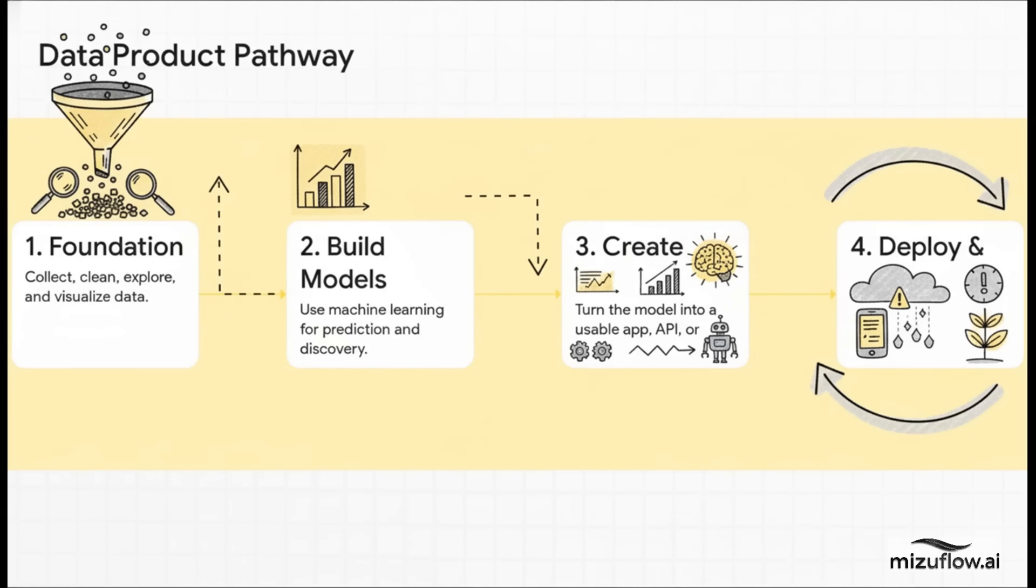And what's so fascinating is that the path to a data product, it starts in the exact same place as a report. You still have to collect, clean, and explore your data. But here's the big leap. Instead of stopping at a summary, you keep going. You use that data to build predictive models. You package those models into an actual tool, like a little web app or an automated alert. And then you deploy it so it runs all the time, constantly getting smarter as new data flows in.